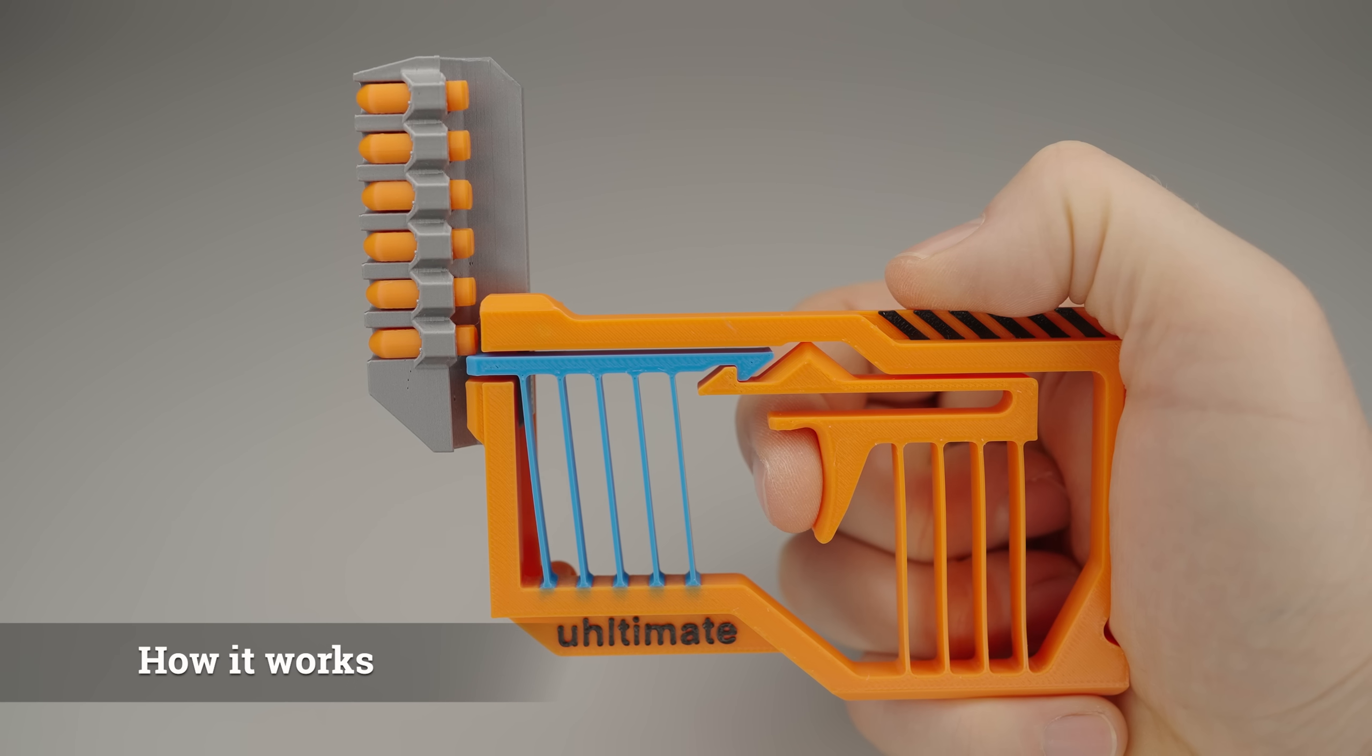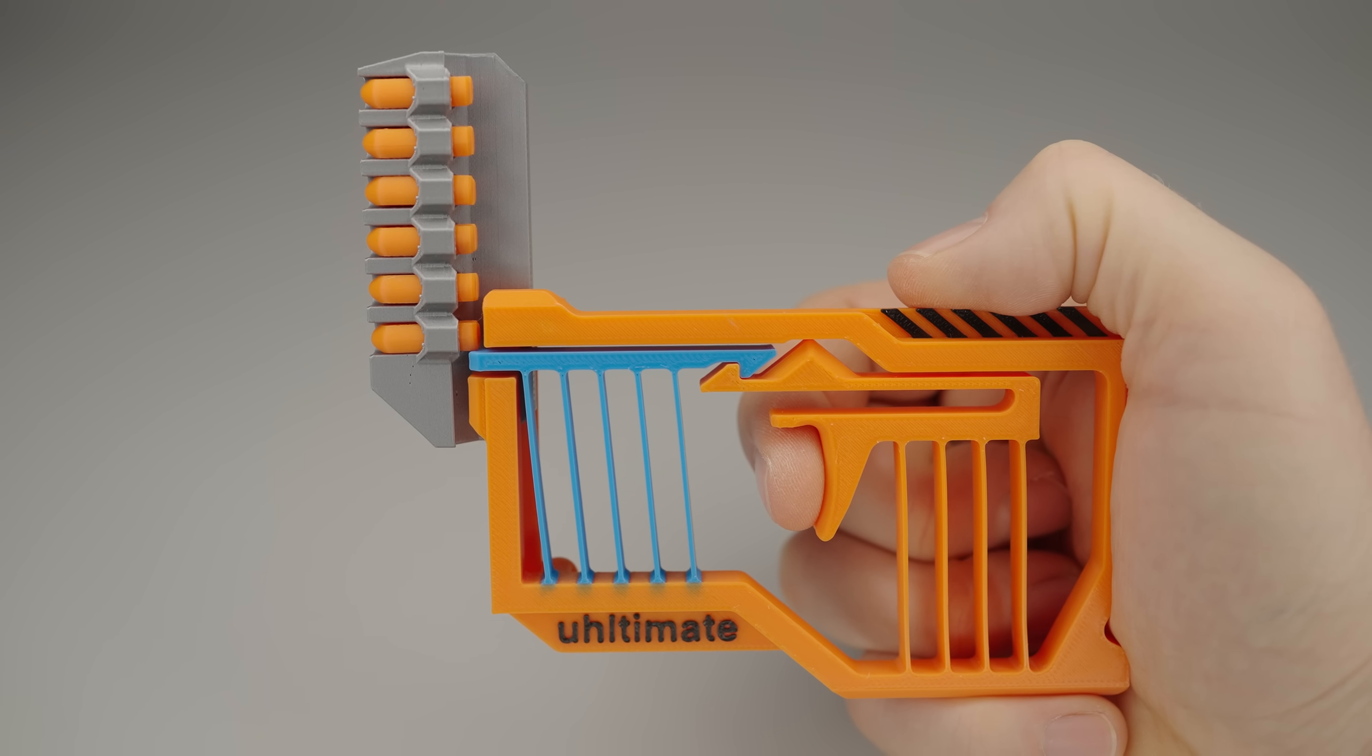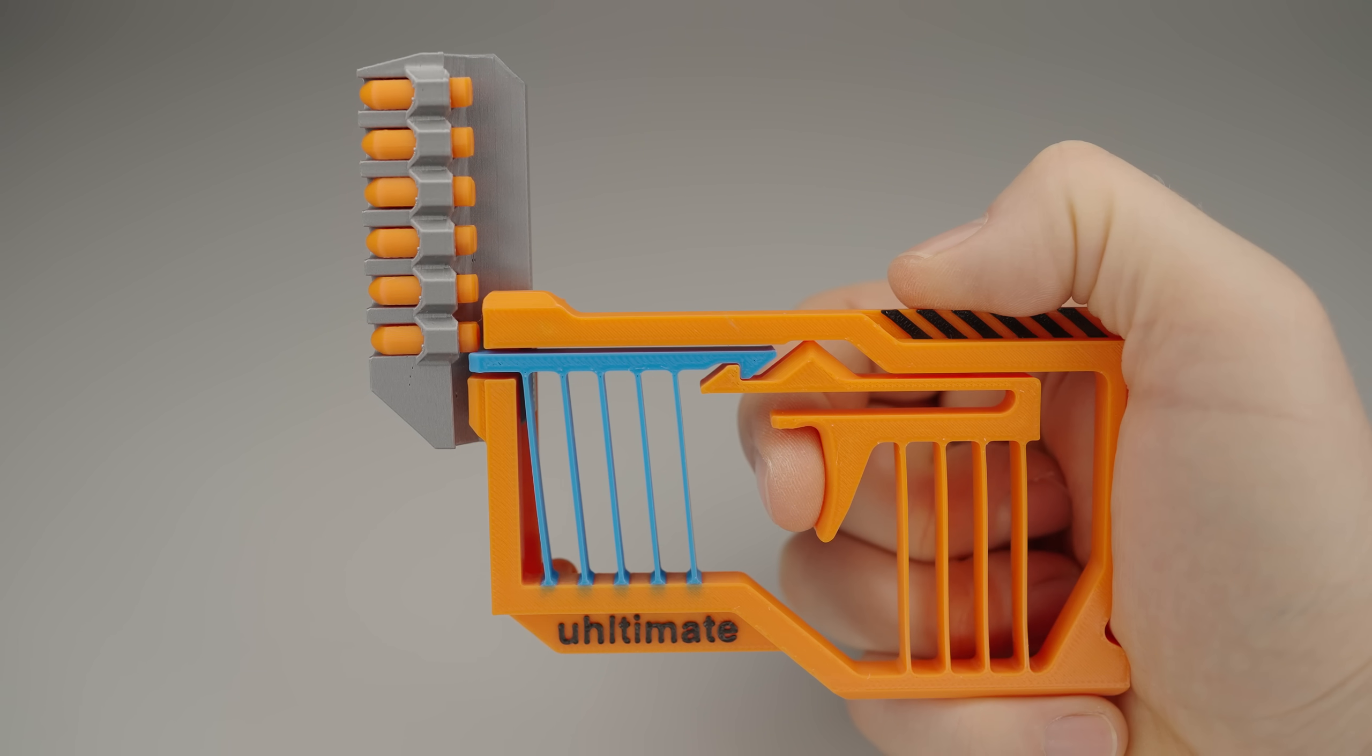To give you a clear look at how it works, I printed a cutout model that shows all the important details. Let's start with the magazine. This is where the bullets are stored. They're just snapped in place so they don't fall out. Six in total.